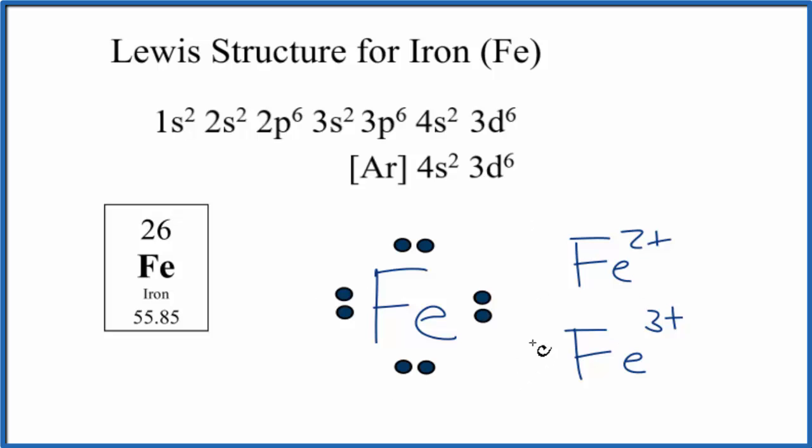And that's what makes it kind of questionable to draw a Lewis structure for iron. It's not as useful since it will only lose some of the valence electrons.